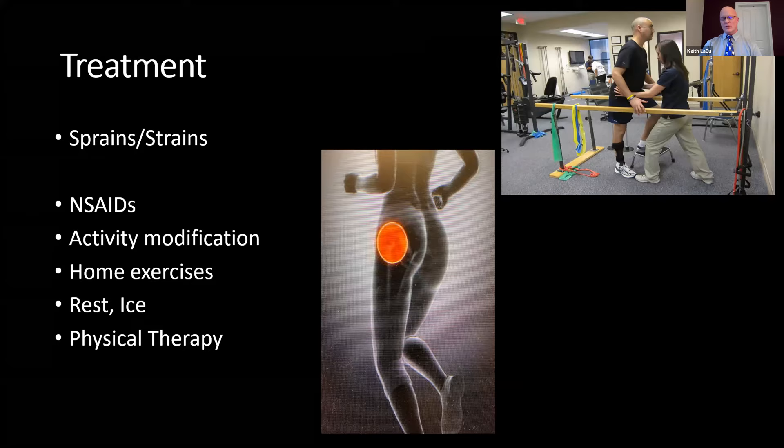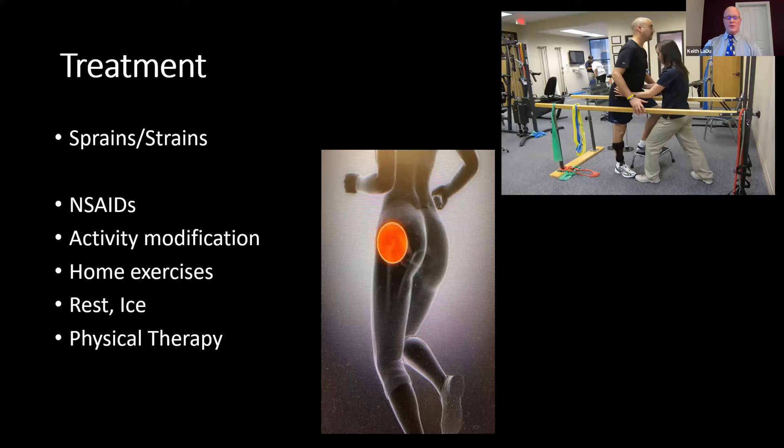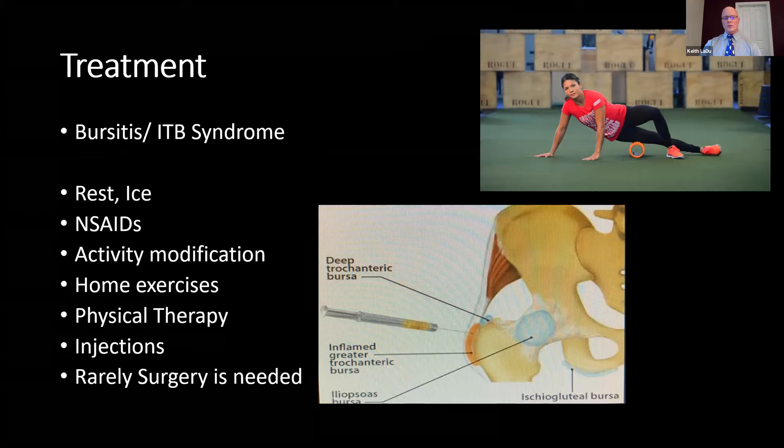As far as treating sprains and strains, a lot of these are going to be very similar: NSAIDs, activity modification, home exercises, rest, ice, and physical therapy. For bursitis and IT band syndrome, the same applies — rest, ice, NSAIDs, activity modification, home exercises, physical therapy, and occasionally injections.